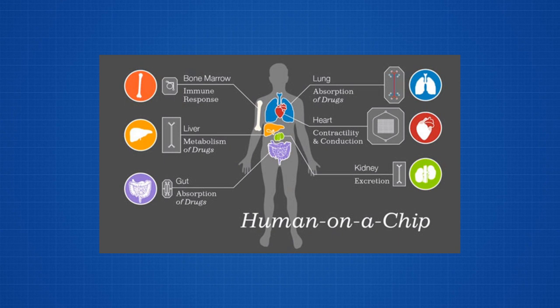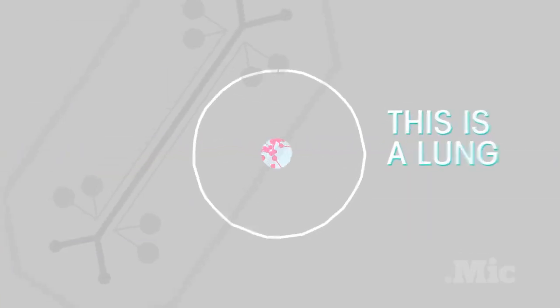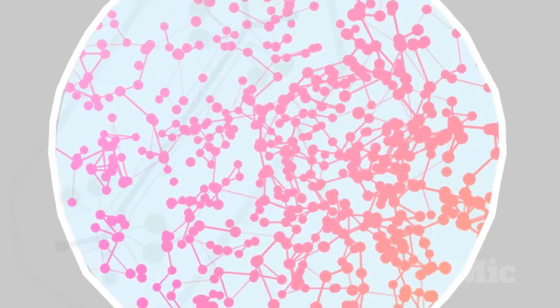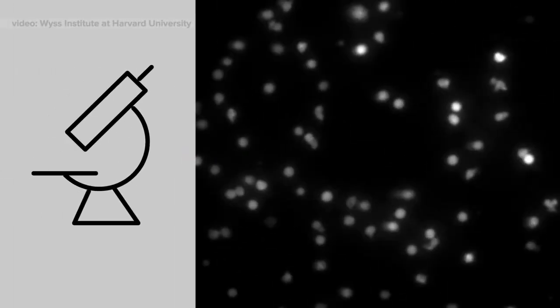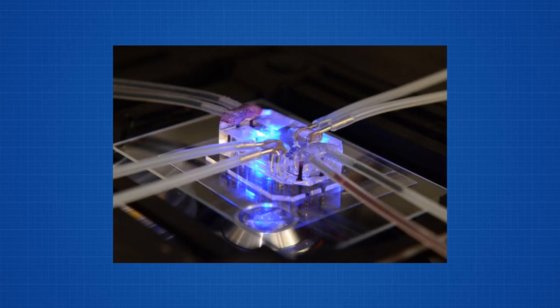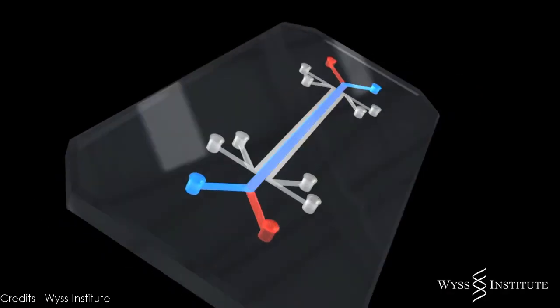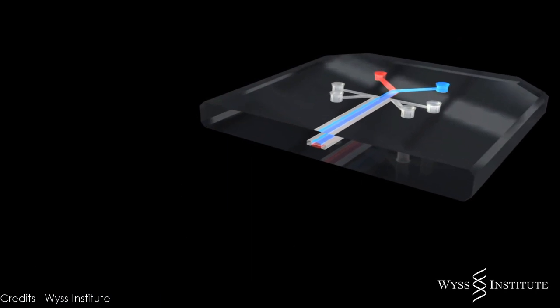Wyss Institute researchers and a multidisciplinary team of collaborators have engineered microchips that replicate the microarchitecture and functions of living human organs, including the lung. They call it a lung-on-a-chip. Let us understand what is a lung-on-a-chip. It is an artificial lung that we want. This is manufactured by techniques of the computer chip manufacturing industry to make a structure at a scale relevant to both the cells and their environment. This device mimics the mechanical and chemical functions of a living, breathing lung.